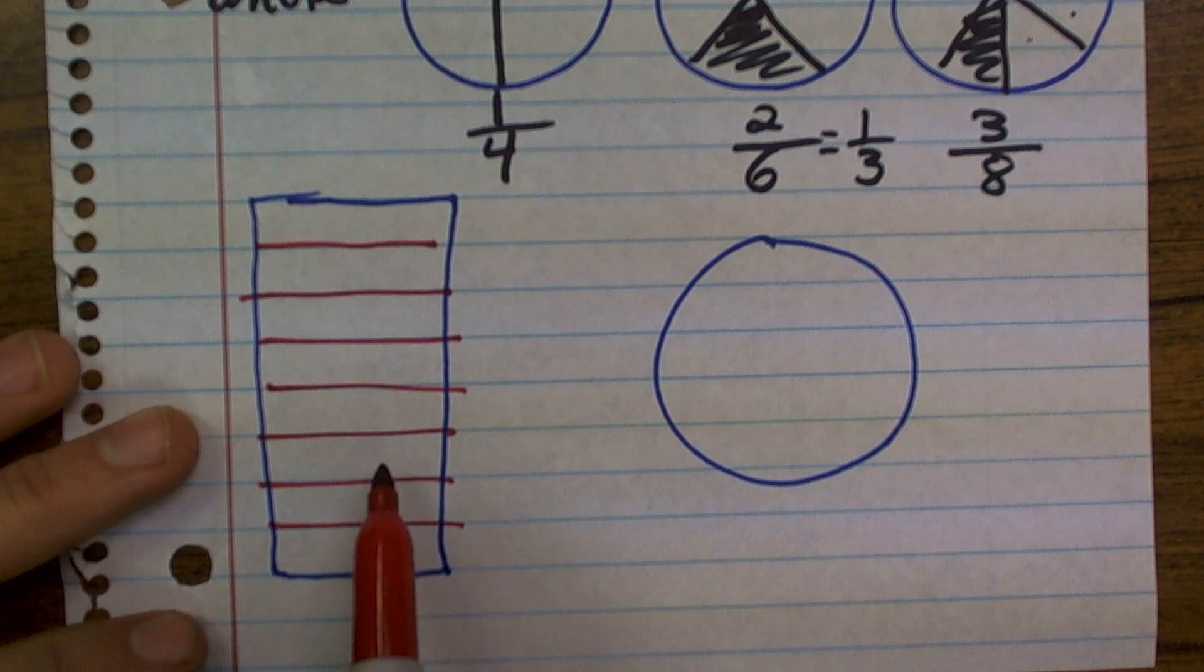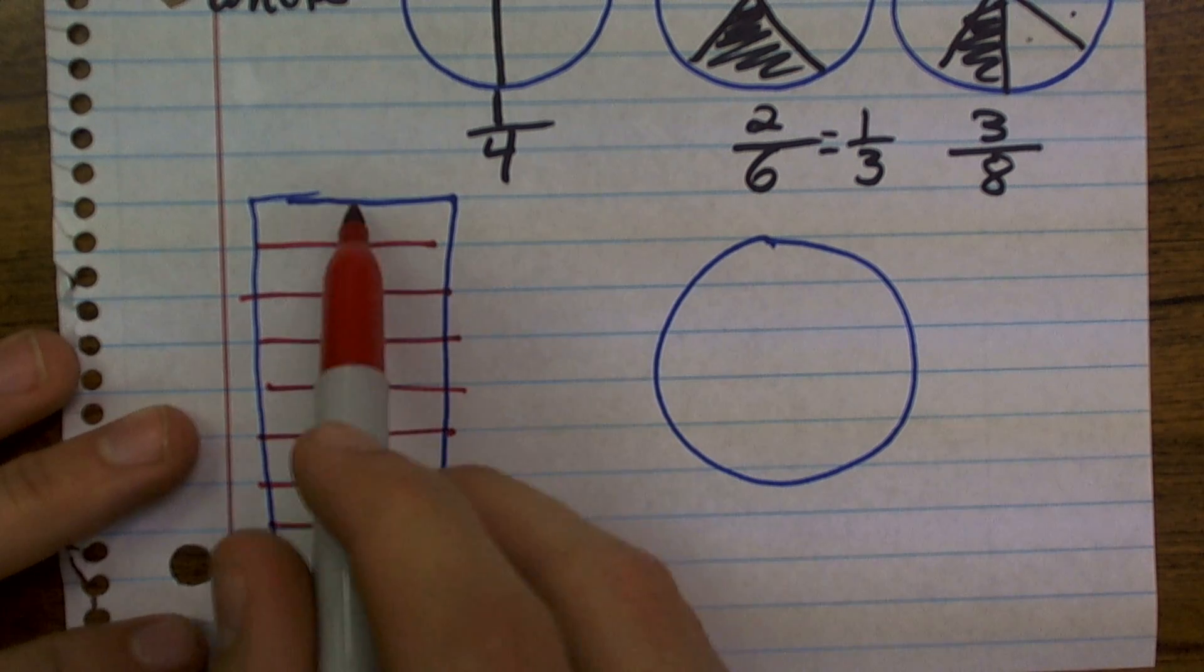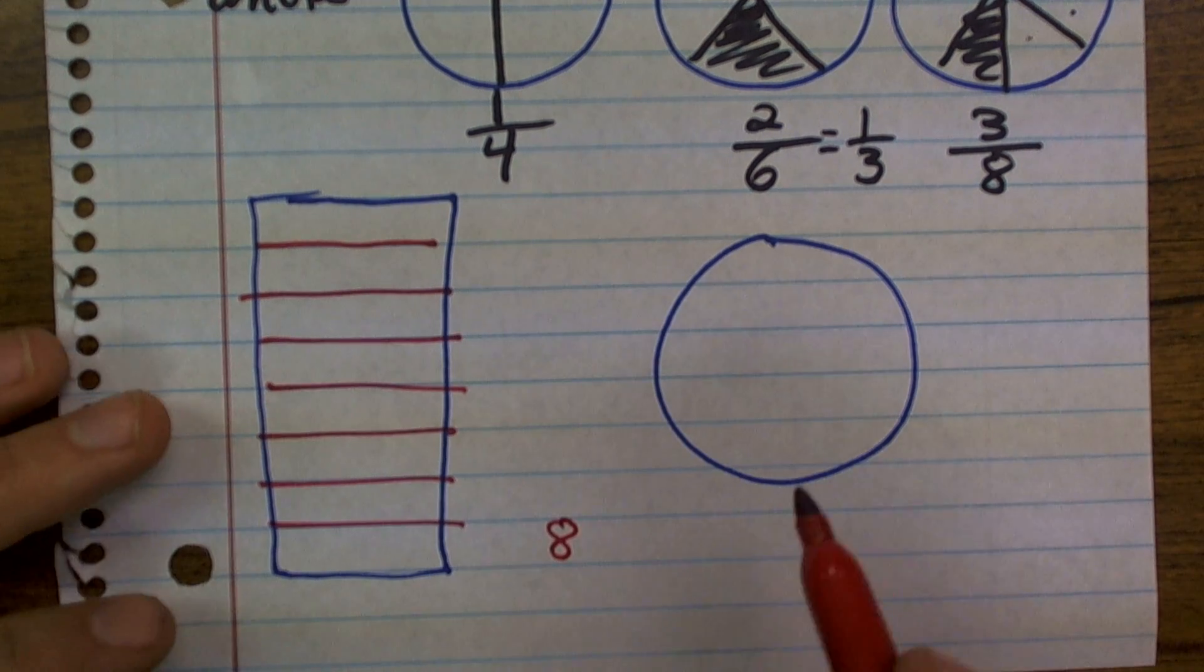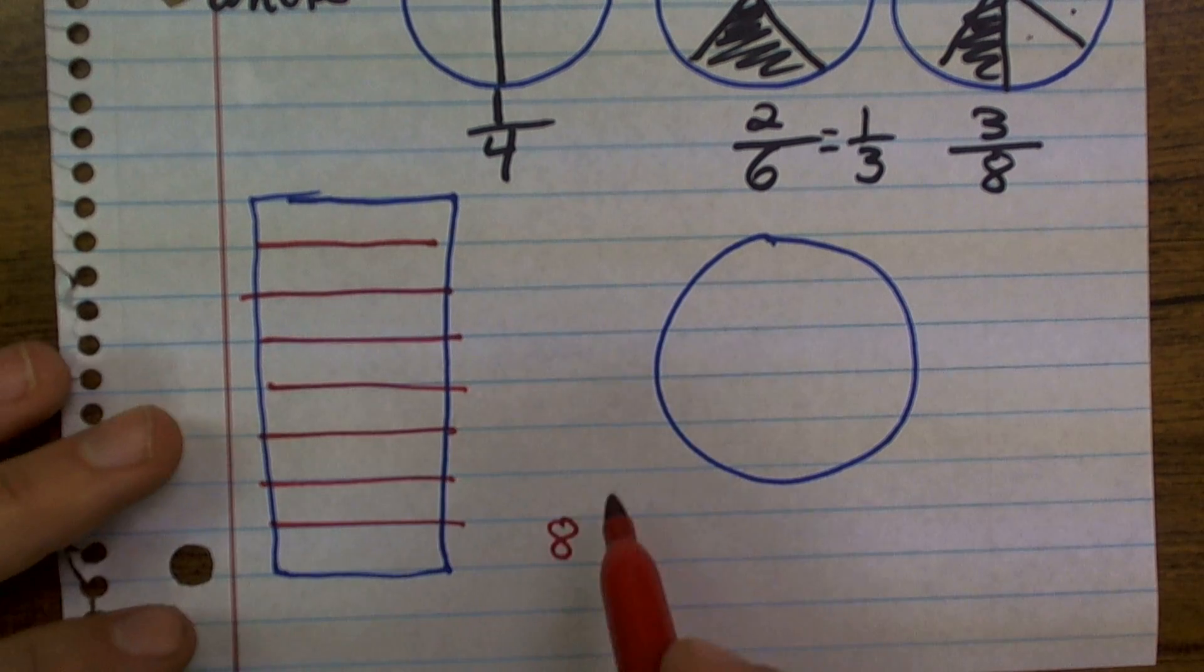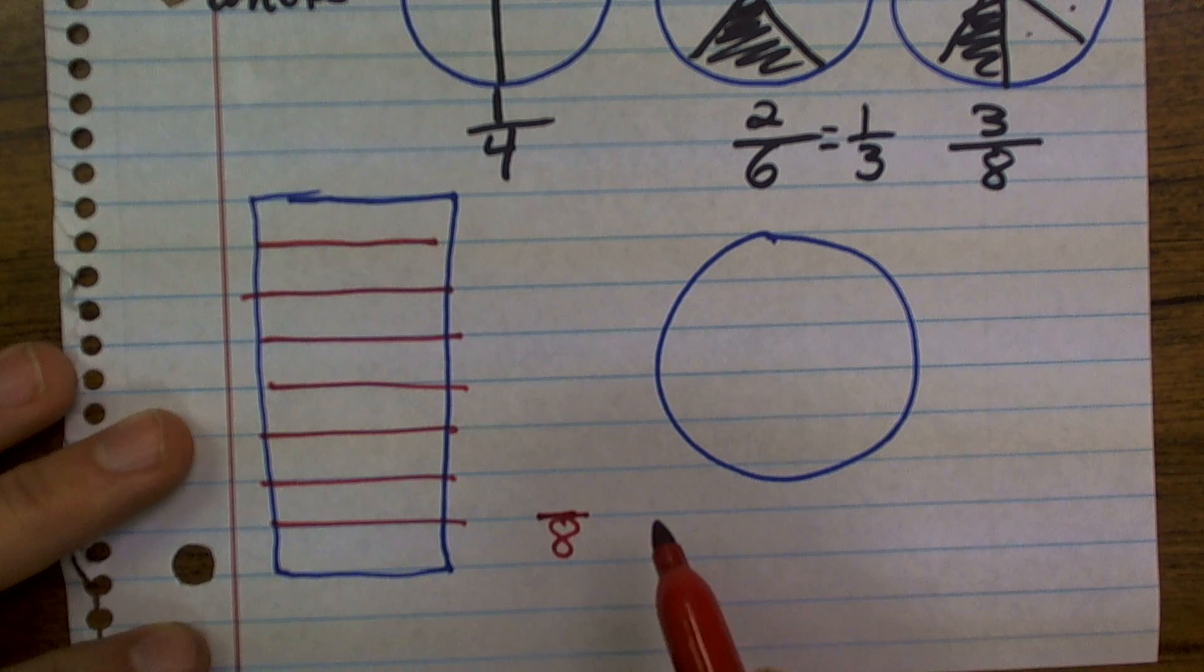All I did was section it off into 1, 2, 3, 4, 5, 6, 7, 8. Now, I said that before it was one whole bar, correct? Well, now what I've done is I've sectioned it into eight parts.